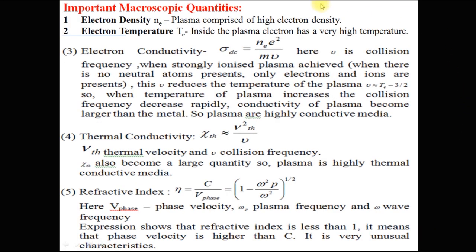We will discuss the important macroscopic quantities. First is electron density, denoted by Ne. Plasma comprises high electron density. Second is electron temperature, given by Te. Inside the plasma, the electron has a very high temperature.